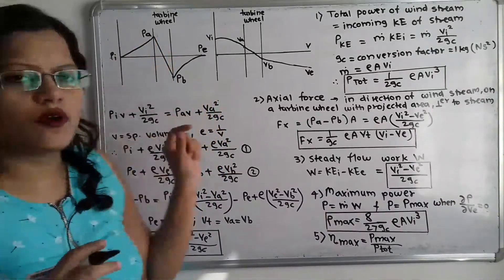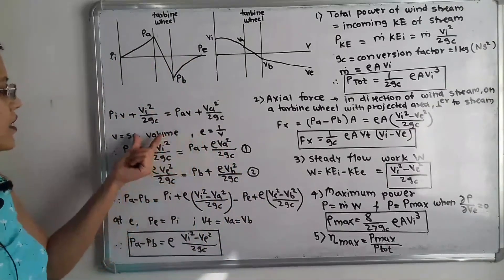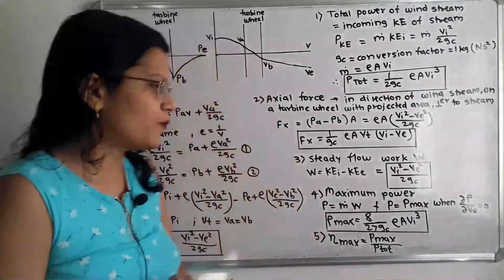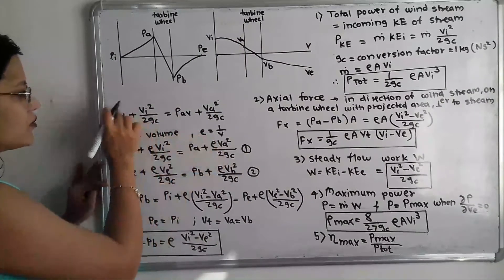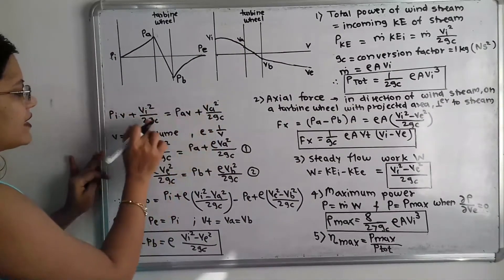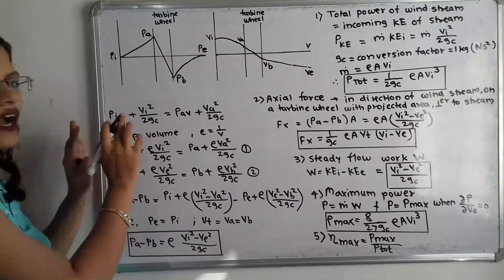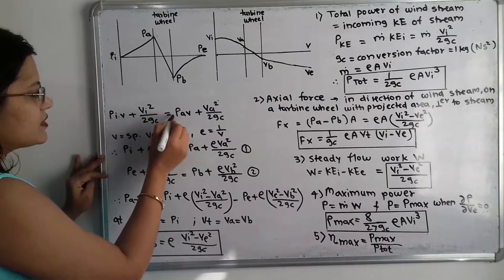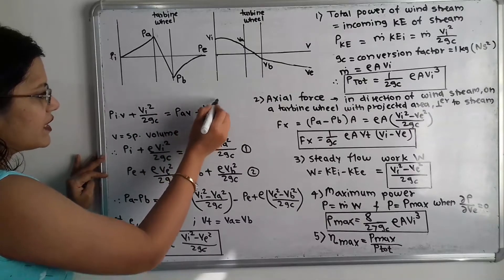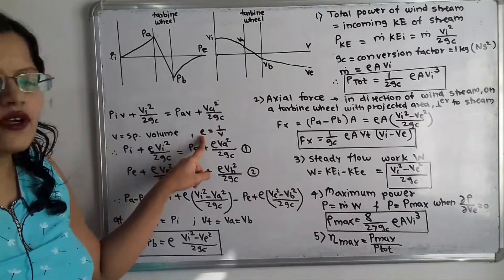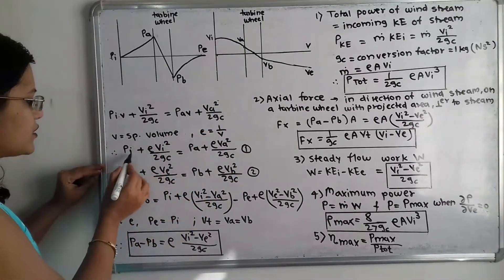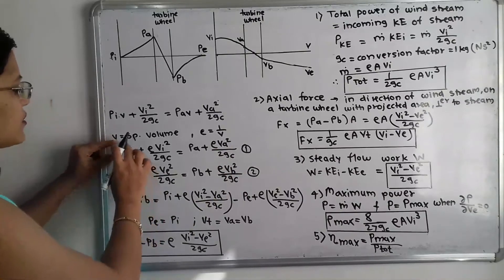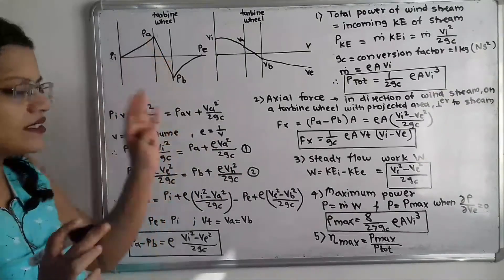Since the reciprocal of specific volume is density ρ, we divide both sides by v. The equation between i and a becomes: pi + ρ·vi² / (2gc) = pa + ρ·va² / (2gc). This is equation 1. Similarly, between b and e: pe + ρ·ve² / (2gc) = pb + ρ·vb² / (2gc). This is equation 2.